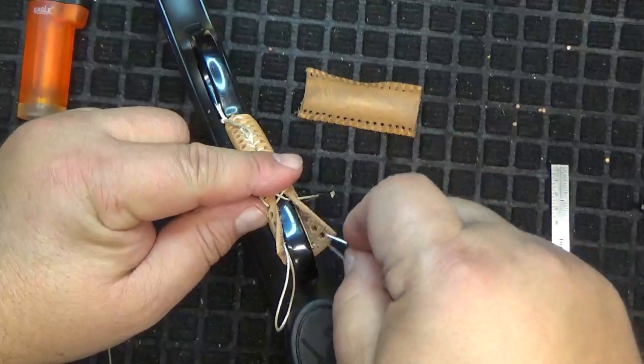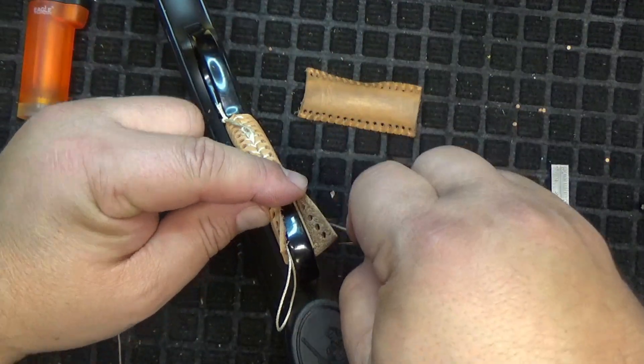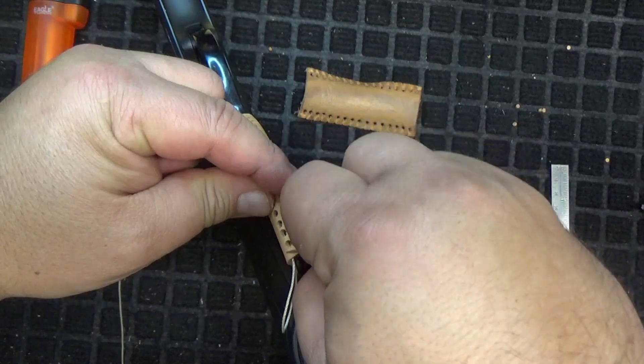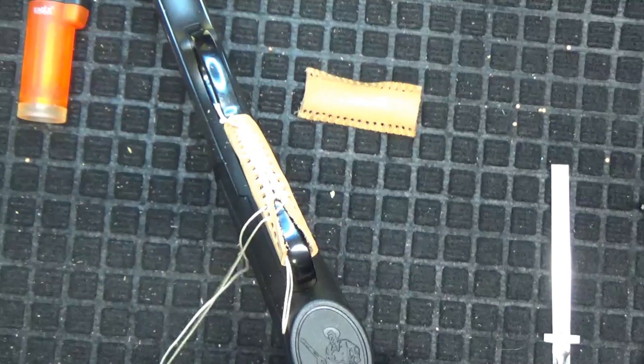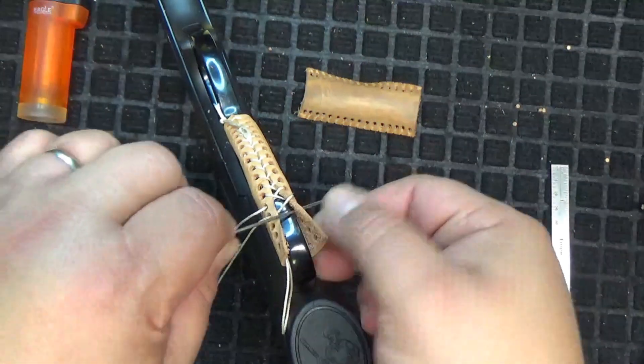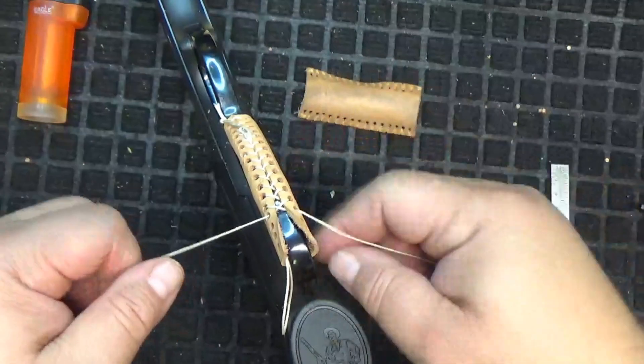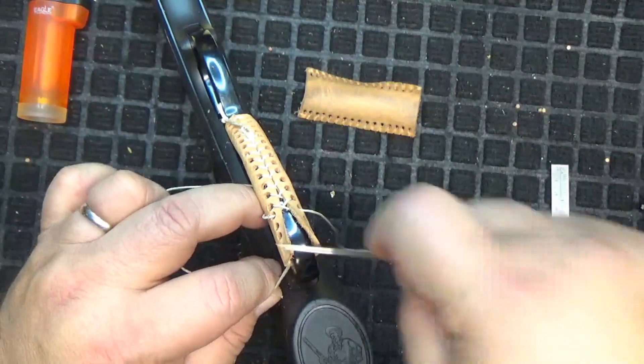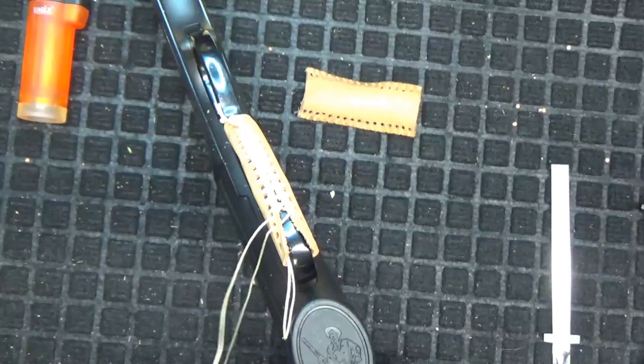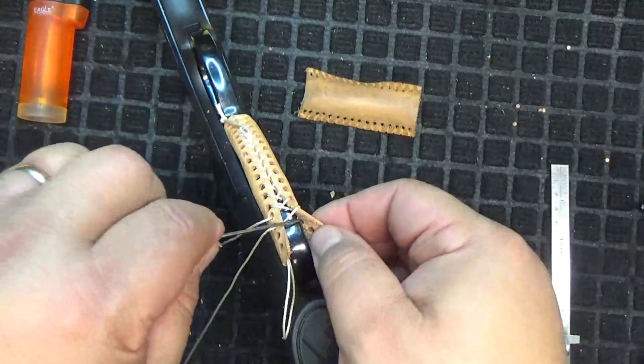Let's see. One, two, three, four on each side. So we've got the same amount of holes left, we're doing alright. Two more to go.